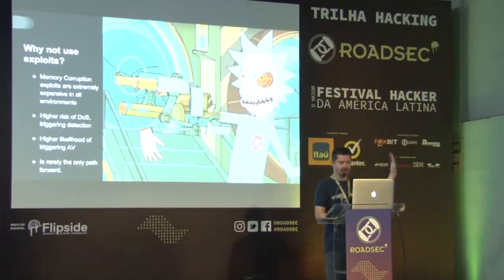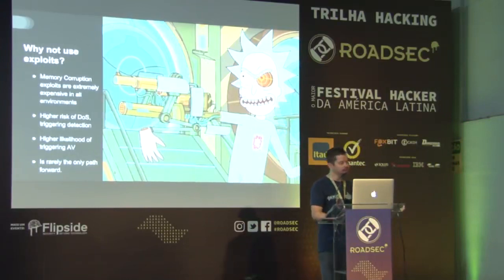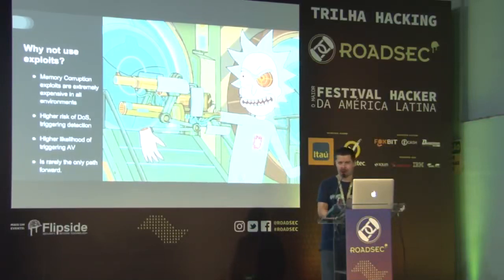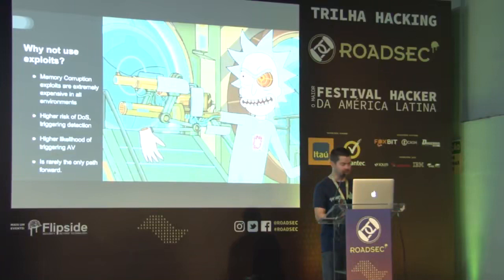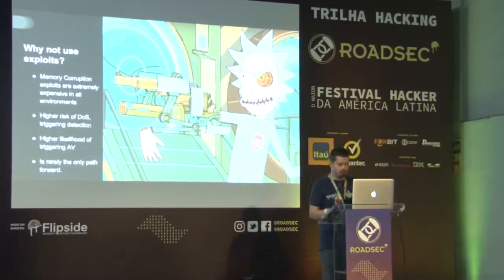So why not use exploits? All of this is done without using any exploits at all, and there are several reasons. First, memory corruption can be bad — everybody here knows EternalBlue, the exploit from the NSA leaks. The original name for that exploit was EternalBlueScreen because it would crash systems so frequently; it was very unreliable. This ties into a higher risk of denial of service — if a box goes offline, you might get an investigation looking into why the system went down. Also, when you're using exploits, people write signatures for them, so you might trigger detection with an IDS or antivirus. And for us, we simply don't need exploits because we've been successful without using them.